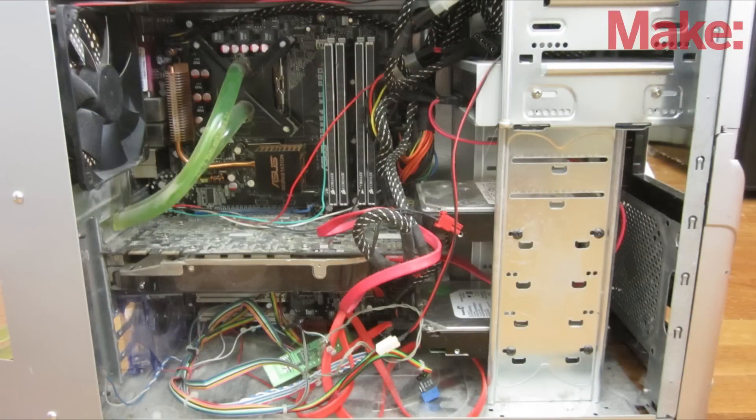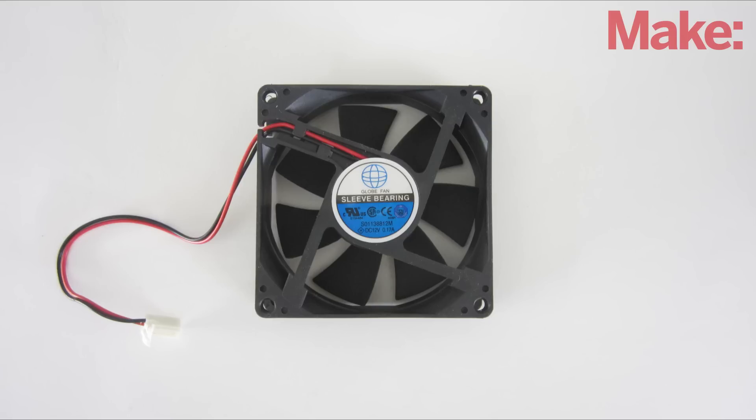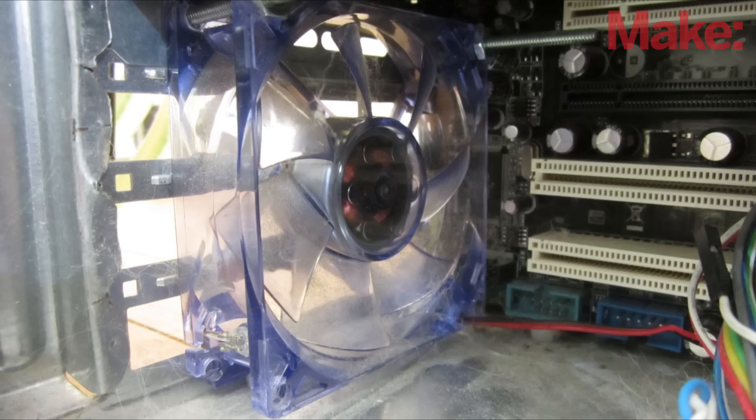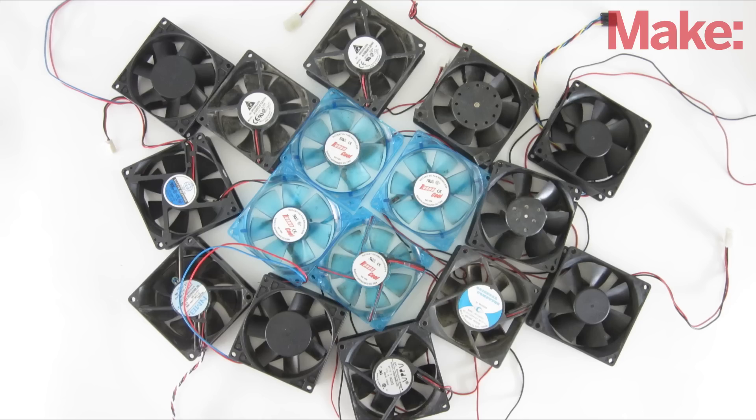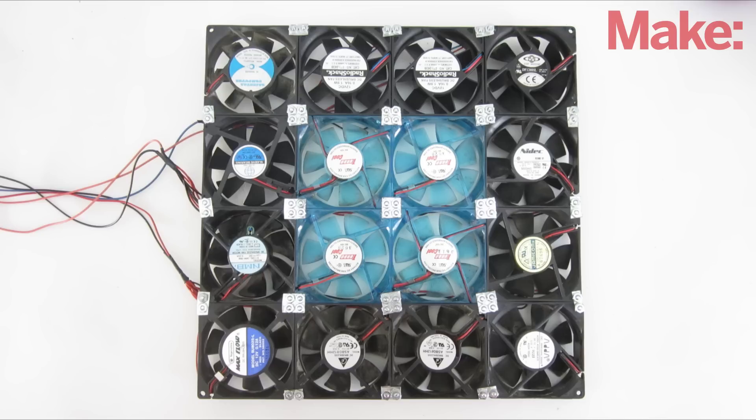Whenever I upgrade a computer, I always try to salvage and reuse the old parts. One part that I've collected a lot over the years is the cooling fan. You find these inside the tower and inside the power supply. But what do you do with a bunch of small fans? You combine them into one big fan.